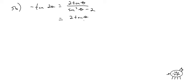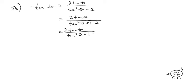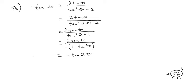So I have 2 tangent of theta over tangent squared of theta plus 1 minus 2. Combining gives 2 tangent of theta over tangent squared of theta minus 1. I need 1 minus tangent squared in the denominator, so I factor out a negative 1, giving negative times 1 minus tangent squared of theta. That's an identity, so it equals negative tangent of 2 theta.